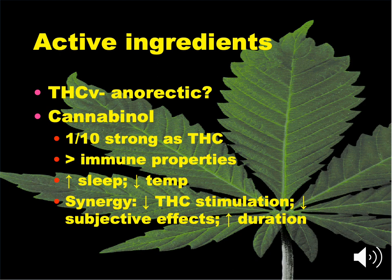The other cannabinoid I want to mention is THCV - tetrahydrocannabivarin - which looks like it's got some potential anorectic effects, both in undoing THC's appetite enhancement and maybe even decreasing appetite by itself. And then CBN - cannabinol - allegedly one-tenth as strong as THC, supposedly enhances some immune properties, increases sleep, decreases temperature at relatively high doses. It may decrease THC-induced stimulation, alter some of its subjective effects, and increase THC's duration. At least one company has been experimenting with this as a sleep aid. It's kind of unpredictable, so proceed with caution.